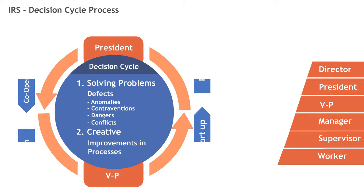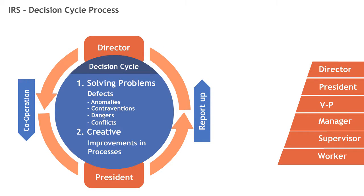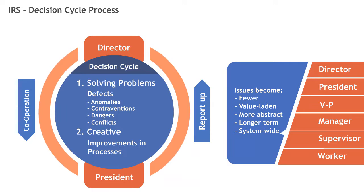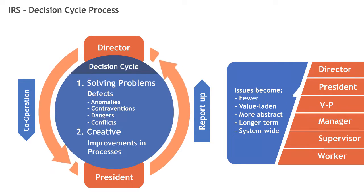Looking at the president — as you go up in the internal responsibility system, the number of issues becomes fewer, but they become bigger and system-wide issues. If the president is receiving reports of wet paper towels as a slip hazard in the washrooms, is there something wrong with the IRS? Yes, because it is not the right size of problem for the president. Somebody is letting that go through, somebody didn't try to solve that problem at a lower level. That would be a failure or a weakness in the IRS.